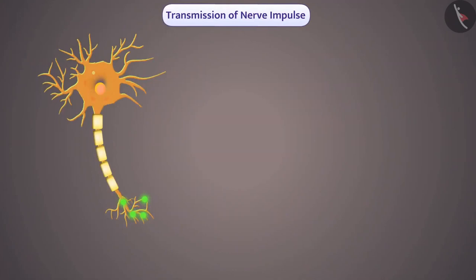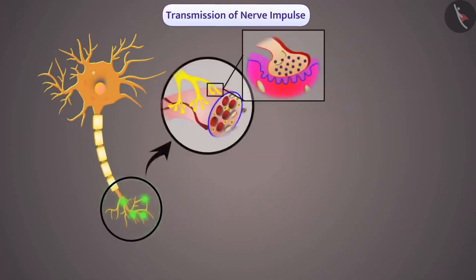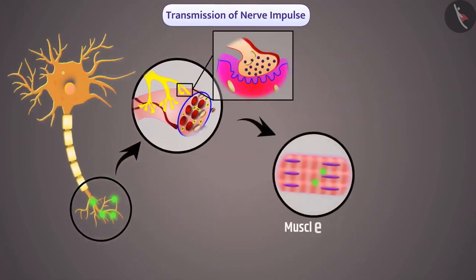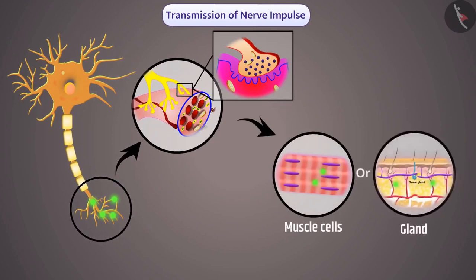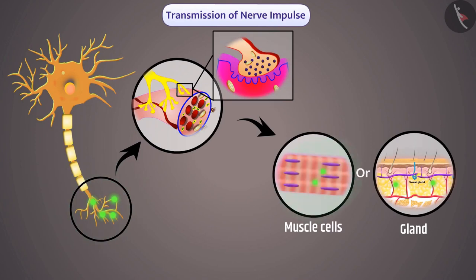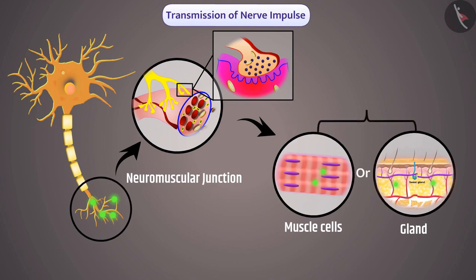The last neuron transmits the electrical impulse to muscle cells or glands through the synapse. The synapse that transmits the impulse from a neuron to muscle cells is called the neuromuscular junction. Muscle cells and glands convert the electrical impulse into action, so we call them effectors.